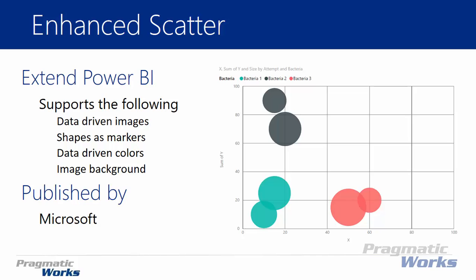You can also make the colors dynamic — based off the data inside the data set. On my screen I have a blue, a black, and a red, and you'll see how to do that in this video. In addition, you can also add a background image to the scatter chart. You can actually do that in the traditional scatter chart as well, but there are some extra things you can do with it in the enhanced scatter chart.